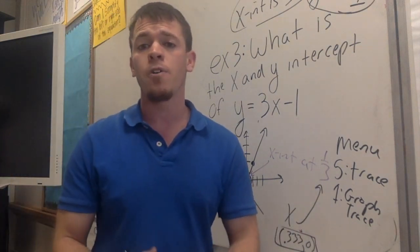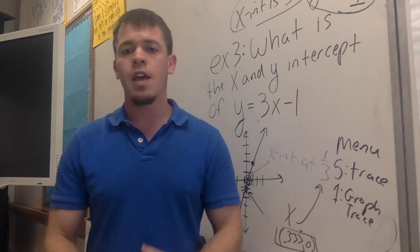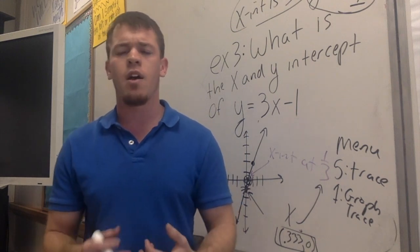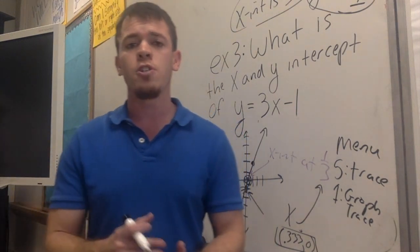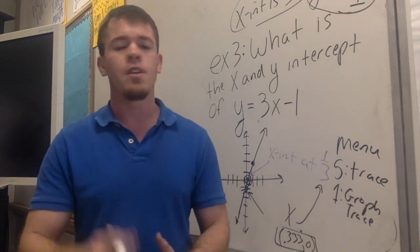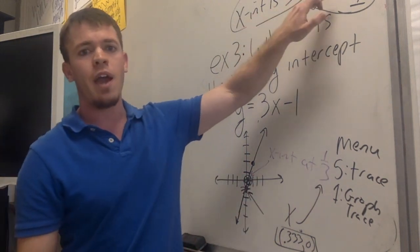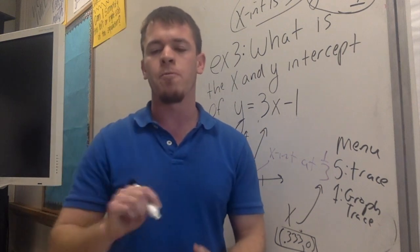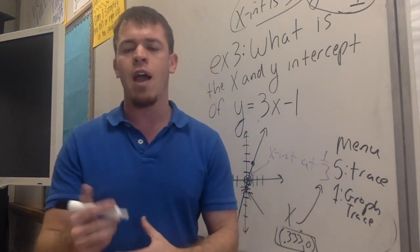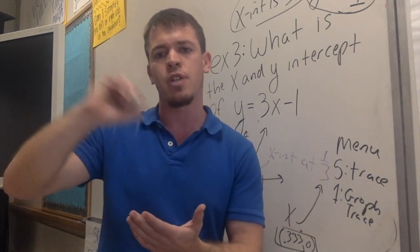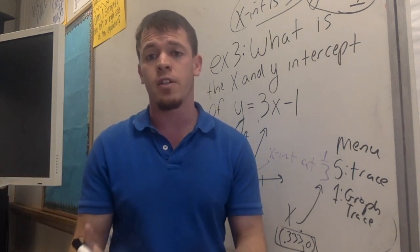You have four problems in front of you. Take about five minutes, find the x-intercept and y-intercept using algebra by plugging in zero, then double-check it with your graph, and sketch that graph on the graph provided to the right on the worksheet.